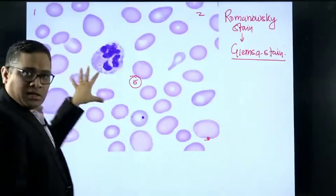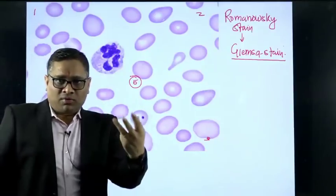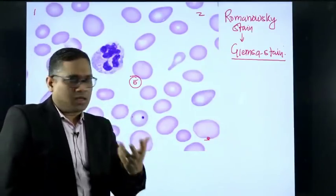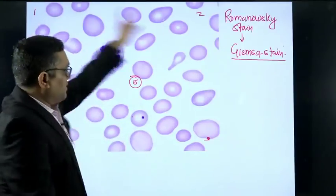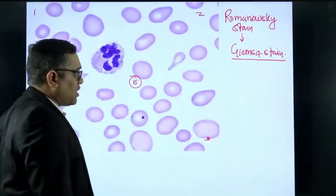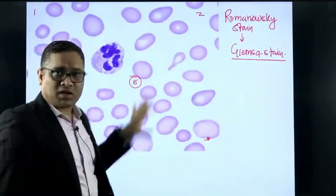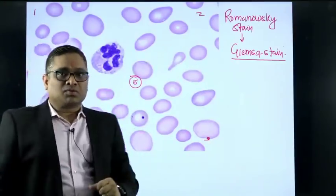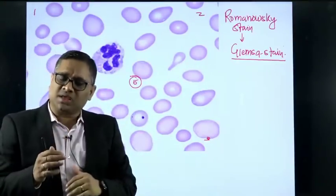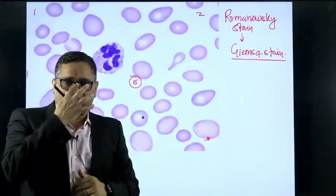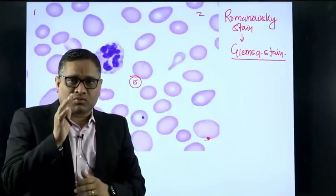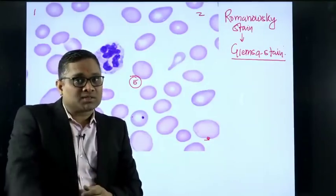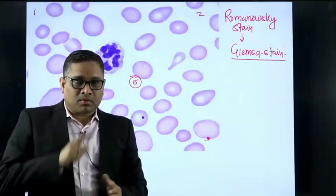There are 3 rules: rule of 3 and rule of 5. Number one: rule of 5 areas — look at 5 areas, then observe, then compare. Whenever we are seeing any hematology slide, that should be our target in examining the peripheral smear.